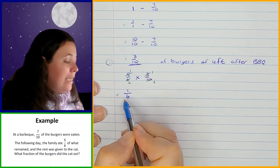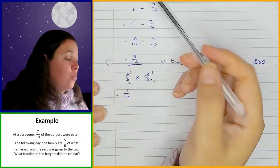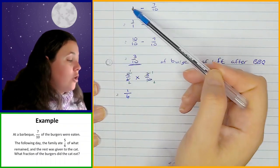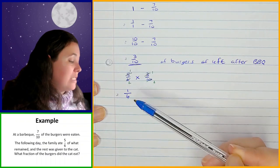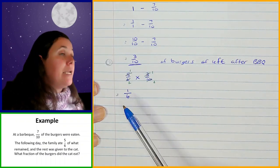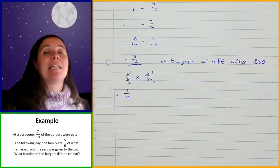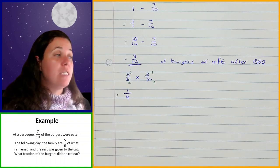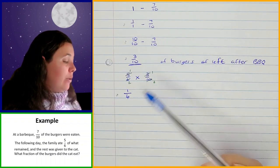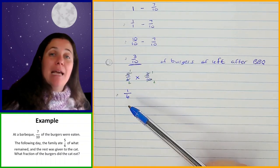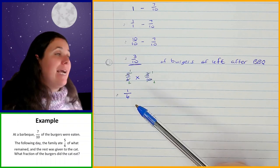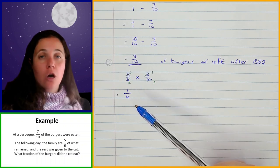So one quarter of the original amount of burgers is what the family ate the next day. Now I need to find out how much the cat got to eat — that's what they asked us. The cat ate whatever was left over, so I need to take what remained after the barbecue and subtract what the family ate.